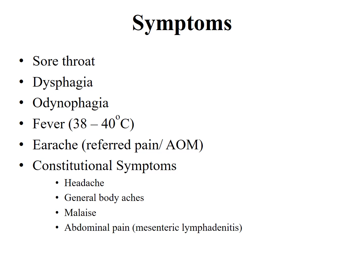Patients present with sore throat, dysphagia (difficulty in swallowing), or odynophagia (painful swallowing). In most patients there is no true dysphagia; difficulty in swallowing is due to local pain. Fever can range from 38 to 40 degrees centigrade and may be associated with chills. Earache can also be present, either as referred pain from the tonsils or due to acute otitis media. Constitutional symptoms include headache, general body aches, malaise, and abdominal pain especially in small children due to mesenteric lymphadenitis.